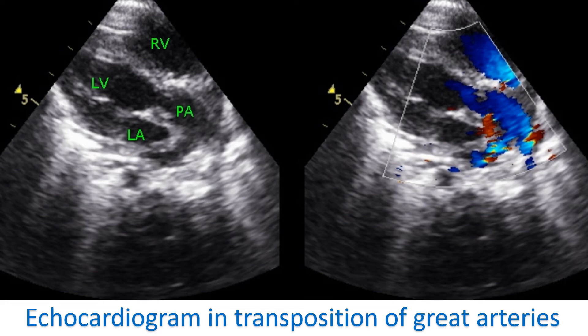Occasionally, a baby with good mixing of blood in the upper or lower chambers due to an associated ASD or VSD may present later in life. This is more likely if there is an additional partial obstruction to blood flow into the lungs, so that the lungs are not flooded with blood causing heart failure. This description covers the more common type of transposition of great arteries. There are other varieties, like congenitally corrected transposition of great arteries, which is functionally normal and often missed at younger age, detected much later in life. Multiple birth defects of the heart can also complicate the picture, which can be identified by a meticulously done echocardiogram.